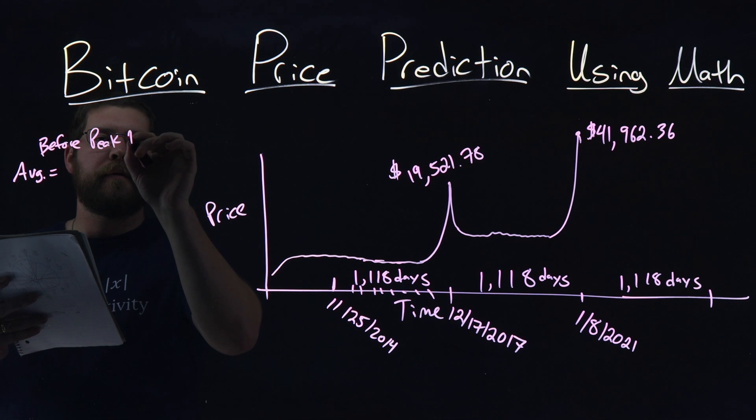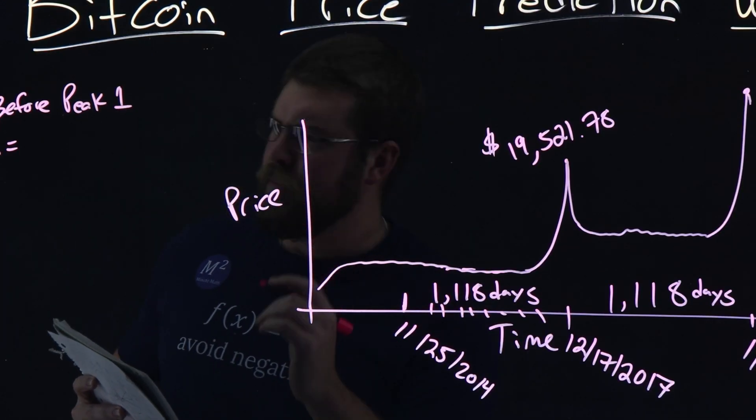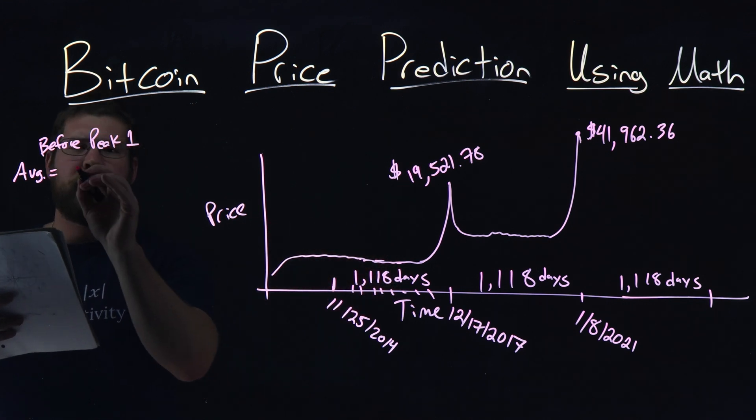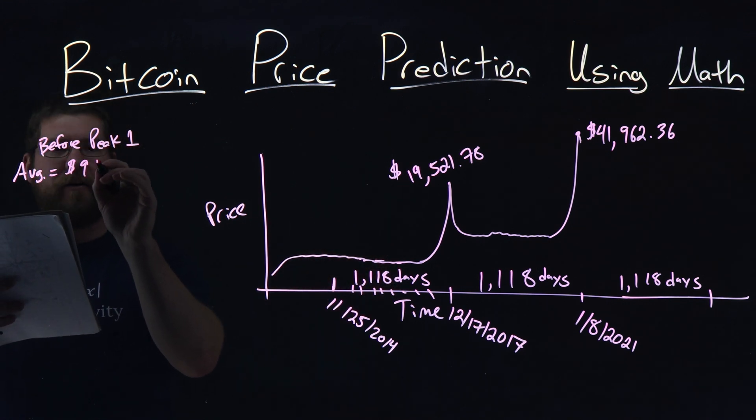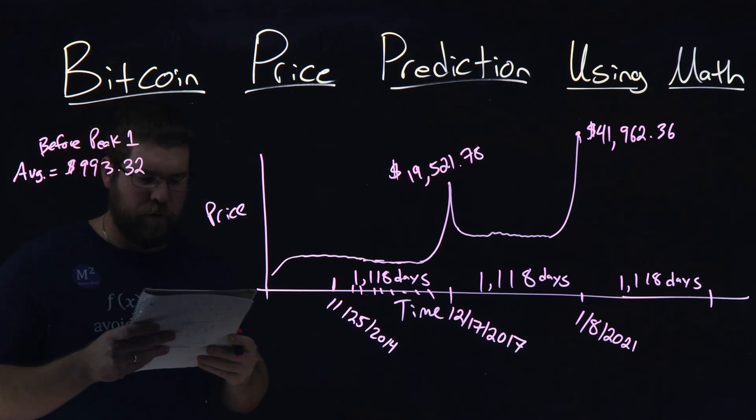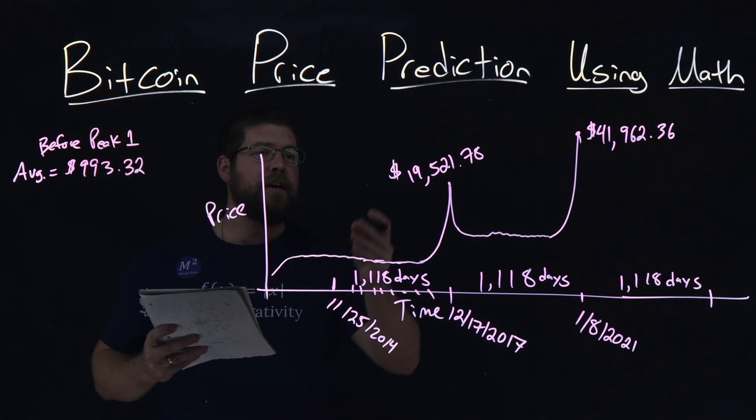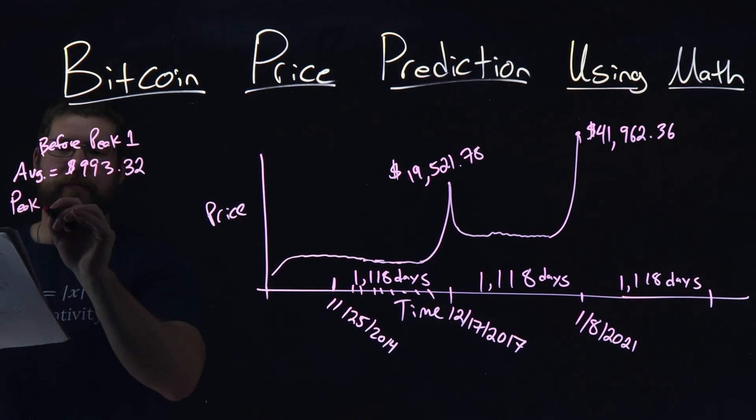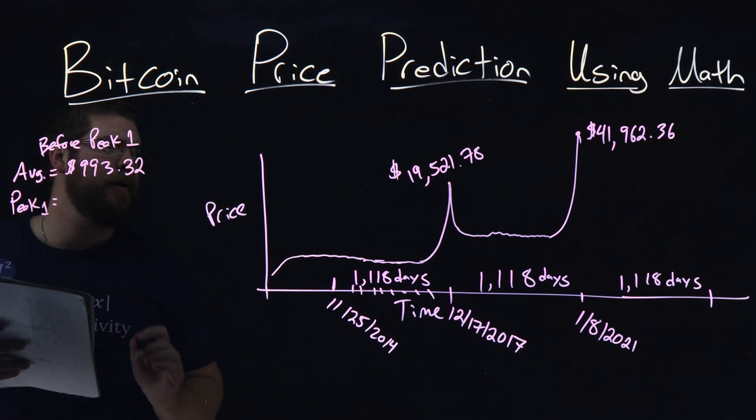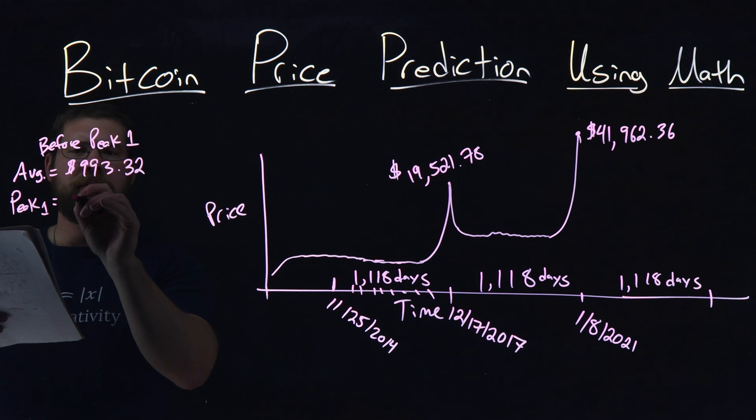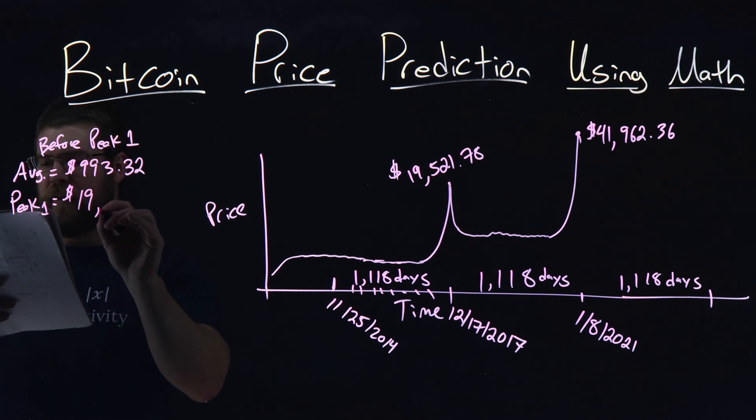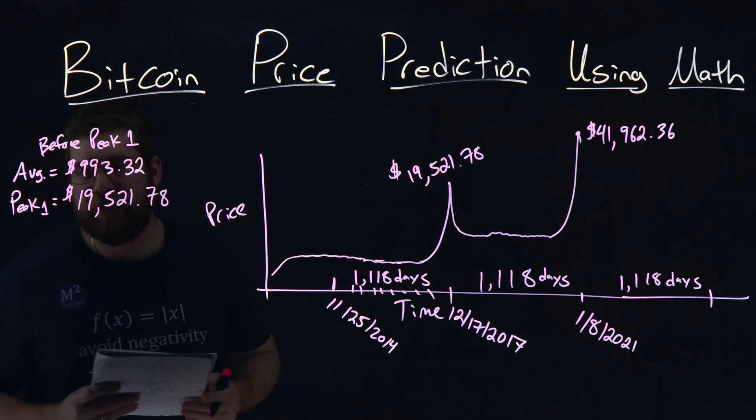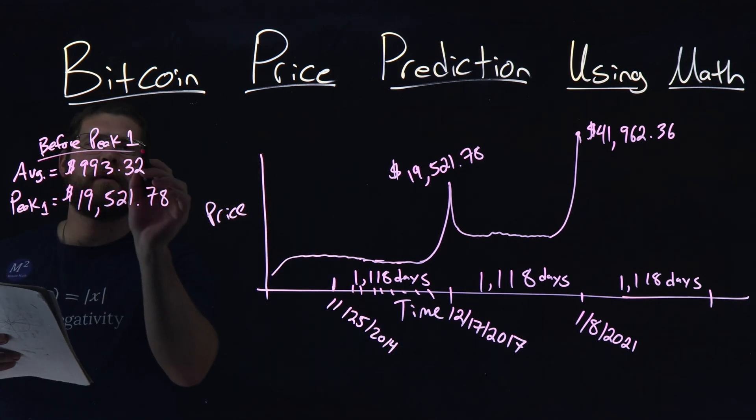So I said the average value, this is before peak one. The average right here, for that time period before peak one, we had an average price of $993.32. And its peak value, our peak one was $19,521.78.